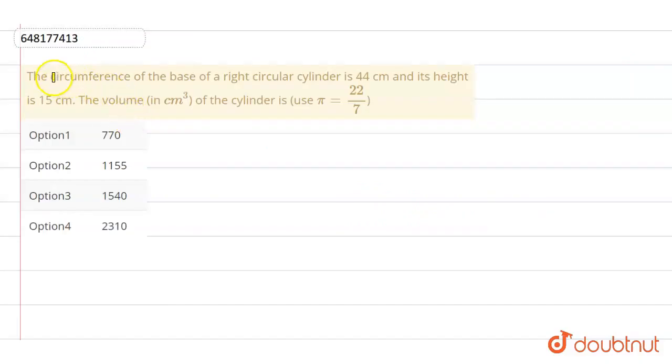Hello students! The circumference of the base of a right circular cylinder is 44 cm and its height is 15 cm. We need to find the volume in cubic centimeters. The circumference of the base is 44 cm.